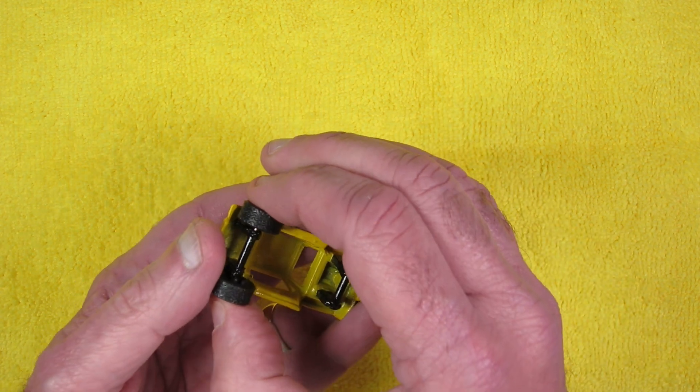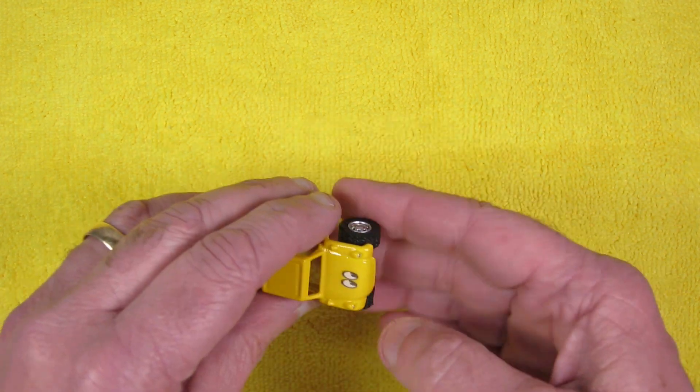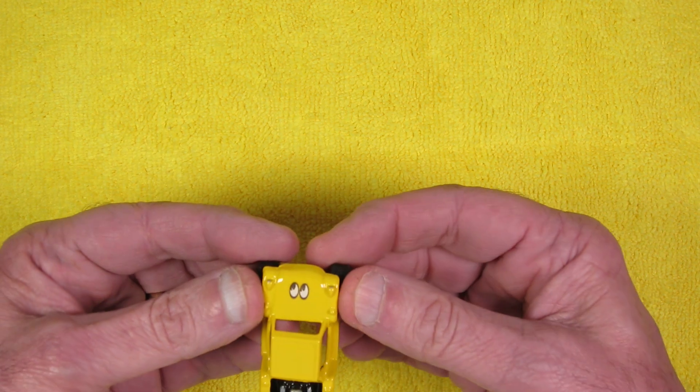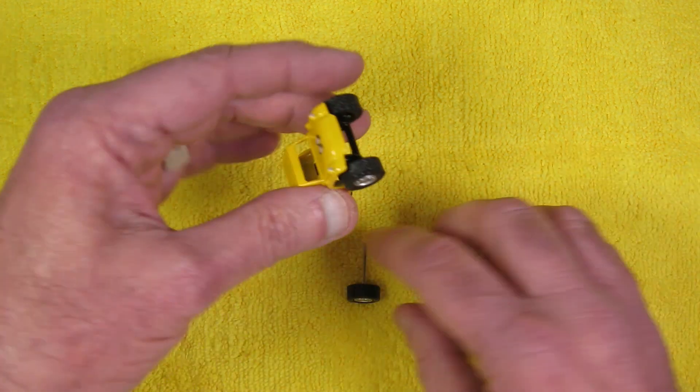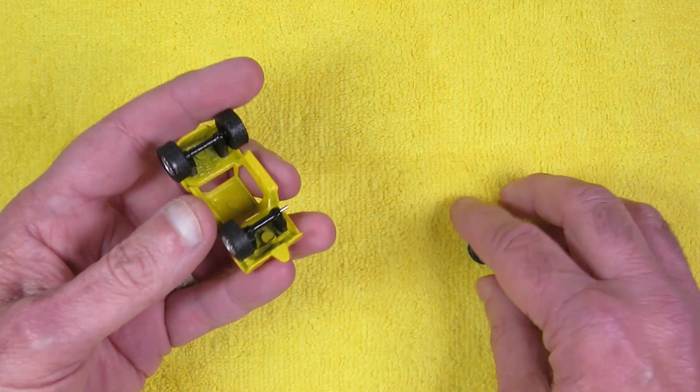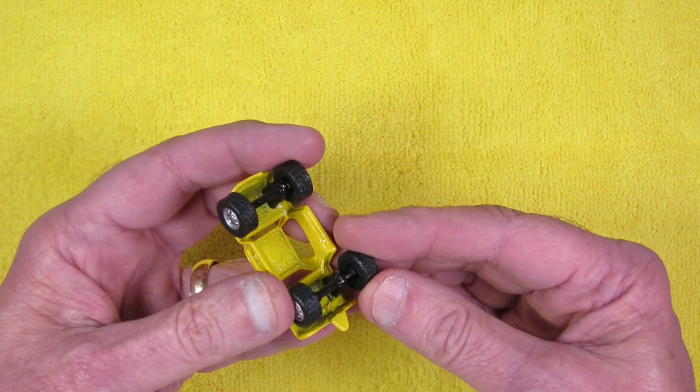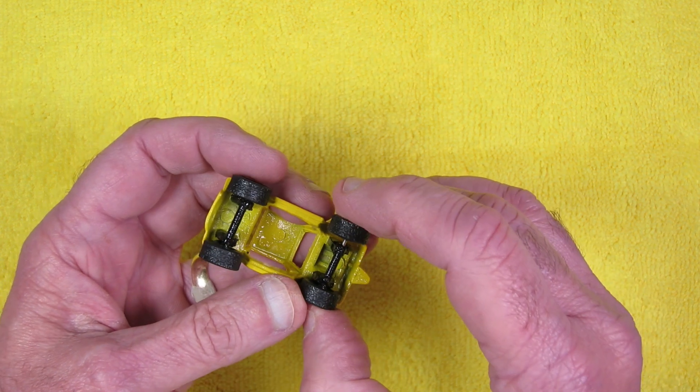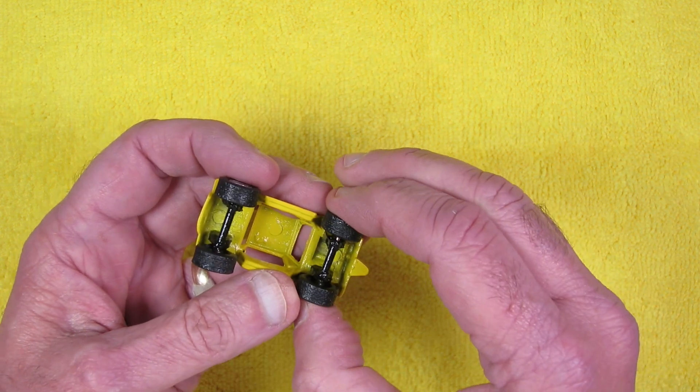I thought about painting that roof rack area black. And then I thought against it. I thought about putting a decal up there. Went against that. Because these are freaking Tootsie Toys. And they're a very basic toy. And they're just so darn cute.